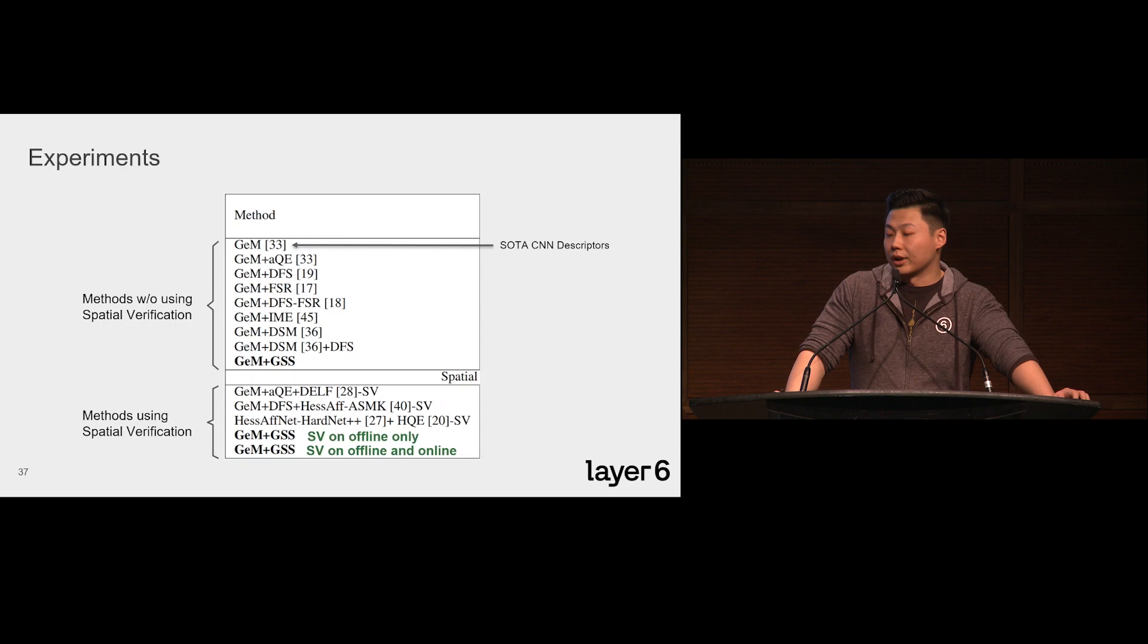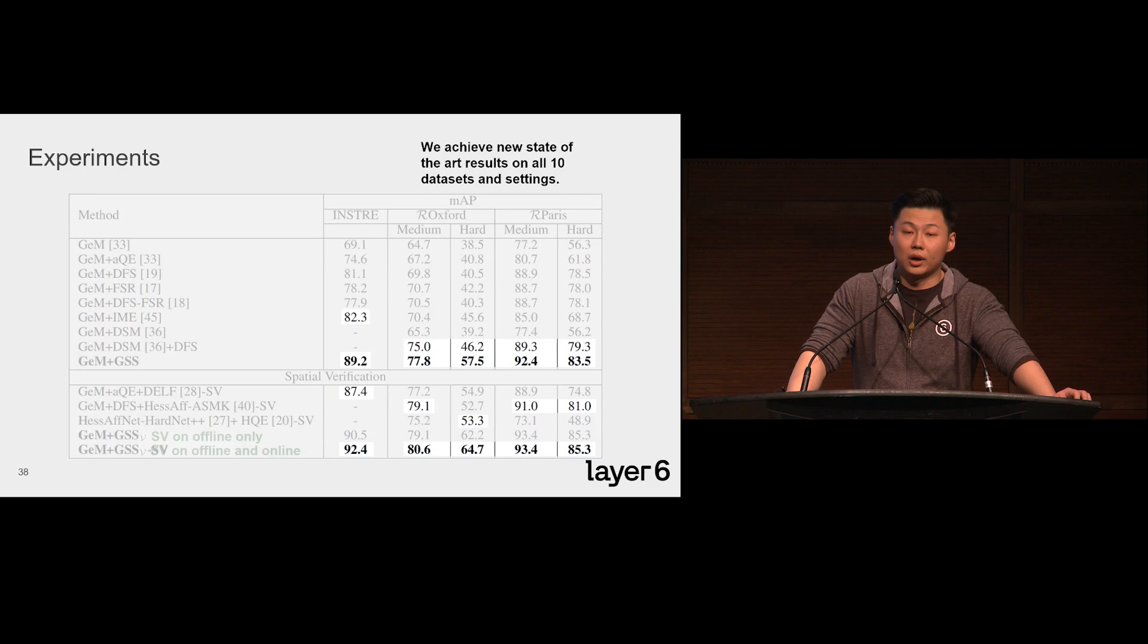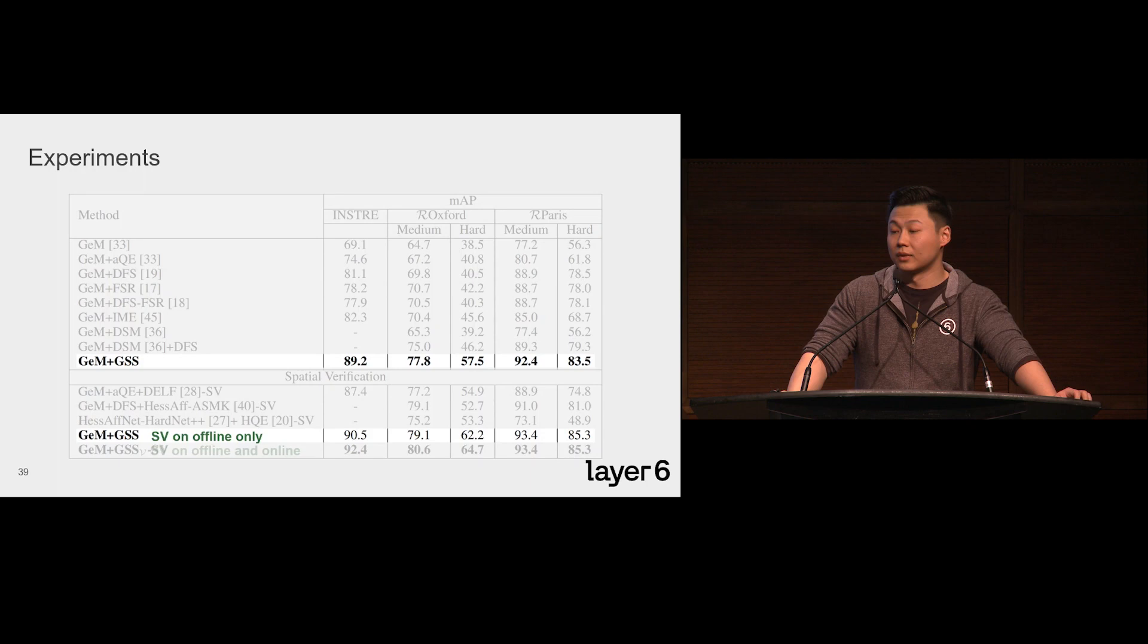As I mentioned before, here we are comparing the vanilla GSS and the GSS with the offline training graph verified by spatial verification. The improvements are significant, and it adds no online runtime overhead. This indicates that our model is actually able to encode the spatially verified graph information into the new descriptors.